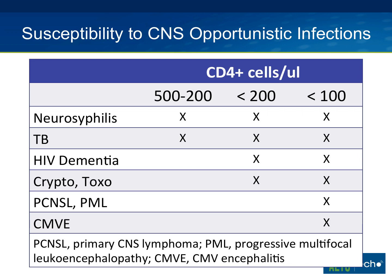For primary CNS lymphoma and progressive multifocal leukoencephalopathy, risk really starts when patients are very immunocompromised, typically CD4 below 100, though there are always exceptions. You would certainly be suspicious of toxo, crypto, PML, or lymphoma in a patient with a CD4 of 500. CMV encephalitis is extraordinarily uncommon now but typically occurs in patients with CD4s below 75 or even lower. CD4 helps narrow things down considerably.